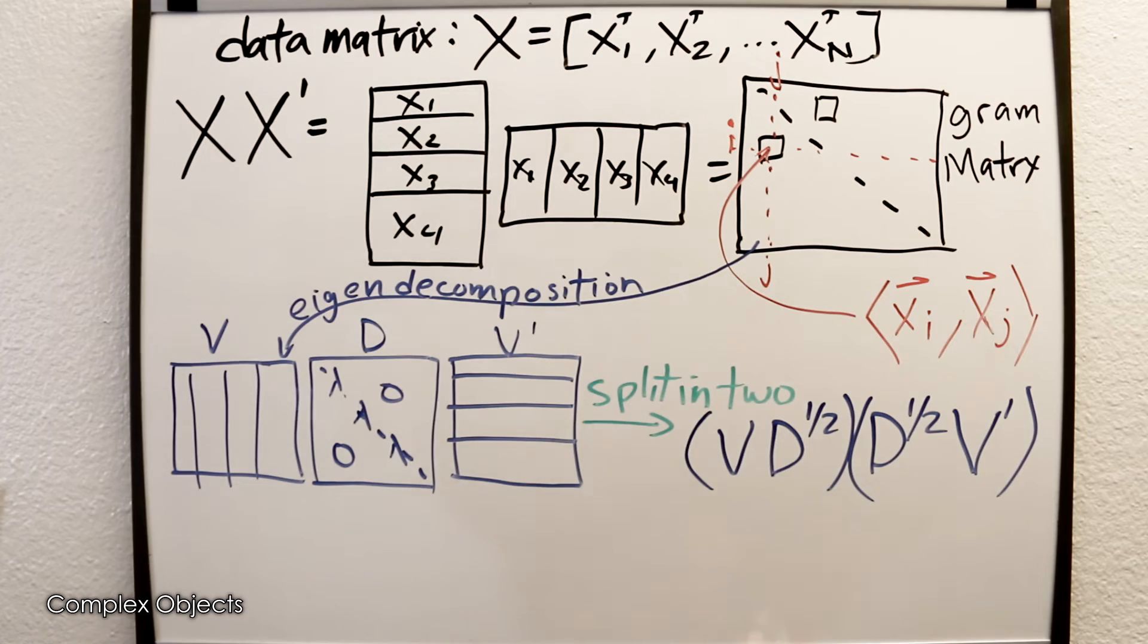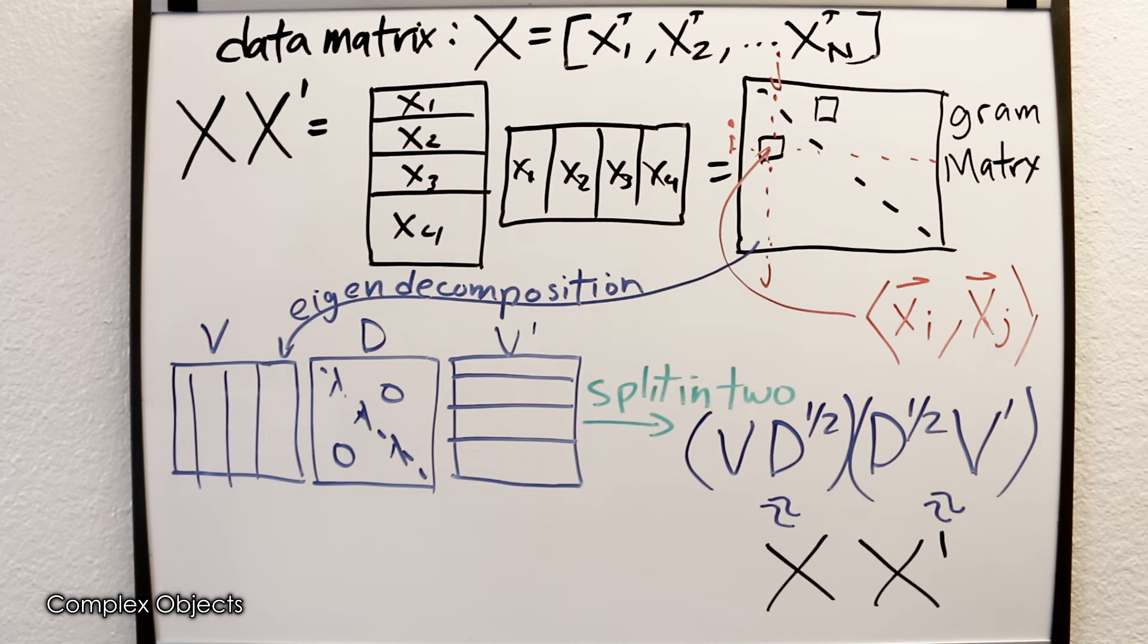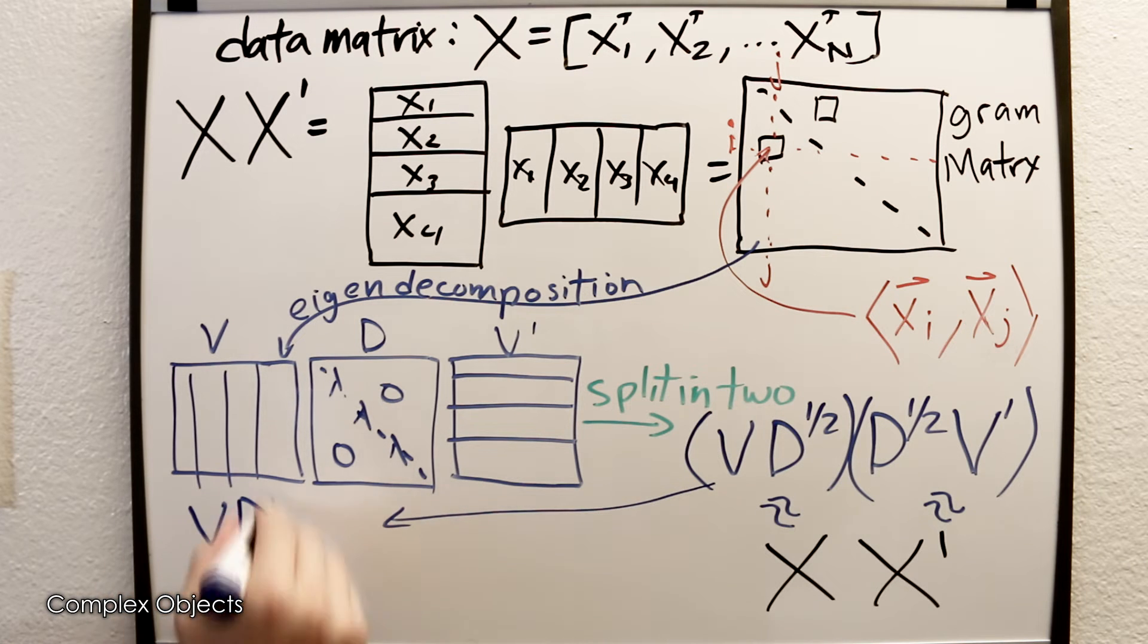We began with the data matrix times itself transposed, and from that we got this gram matrix. Then we decomposed it, and if we take that eigen decomposition and split it in half, it turns out that indeed this V times D to the one half is a sort of expression of that original data.